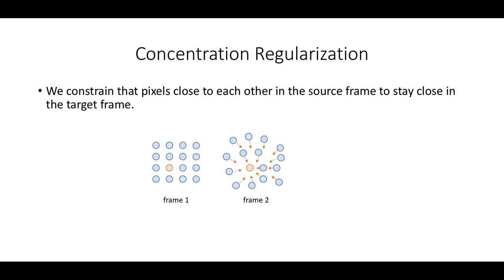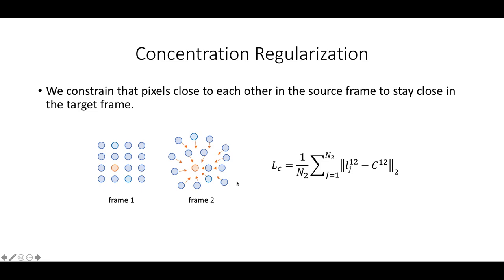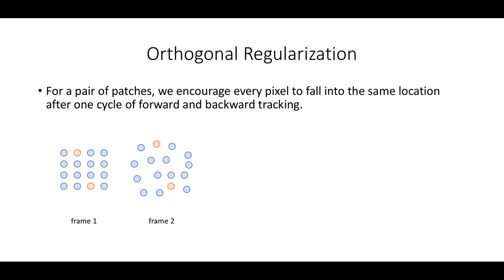For one object or local region, once they are moving over time, they should move as a unit instead of separate pixels diffusing in space. In detail, we carry it out by simply enforcing all the pixels to be close to their center, where C denotes the center. For example, we show the center of the blue pixels as the orange dot, and here we constrain the blue pixels to be geometrically close to each other in frame 2.